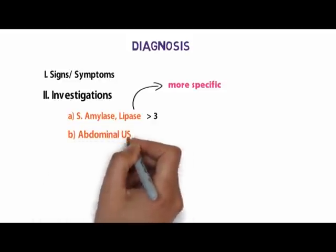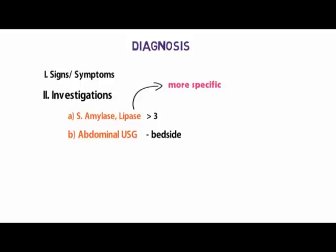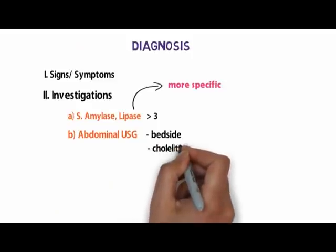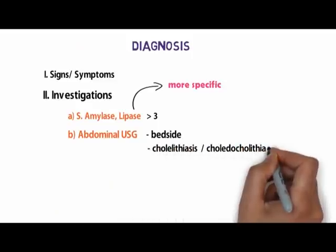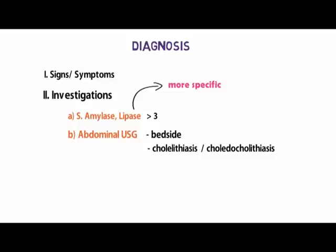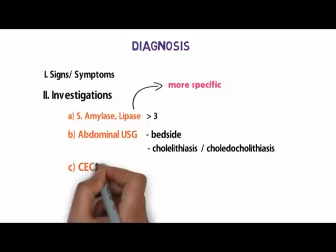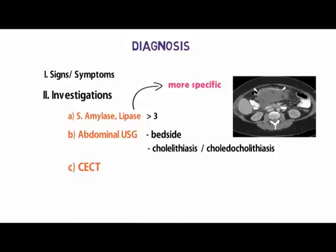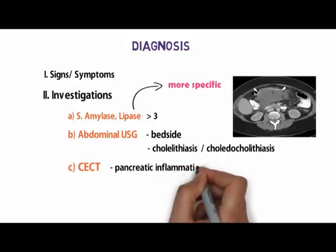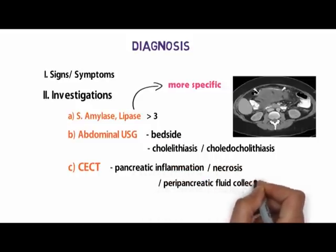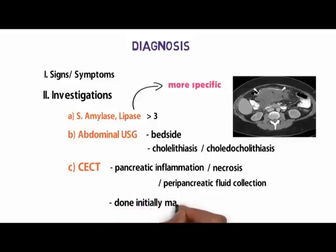Next is abdominal ultrasonography, which is performed bedside. You can see a bulky pancreas on USG, and it should be done for assessment of cholelithiasis (gallstones) or choledocholithiasis (stones in the bile duct). The best modality is CECT — contrast-enhanced CT — for evaluating pancreatic inflammation, necrosis, or peripancreatic fluid collections. However, CECT done at initial presentation may underestimate disease severity, as it takes up to 72 hours for necrosis to develop. Therefore, CECT should be delayed unless there is a concern for other complications or if the diagnosis is in doubt.